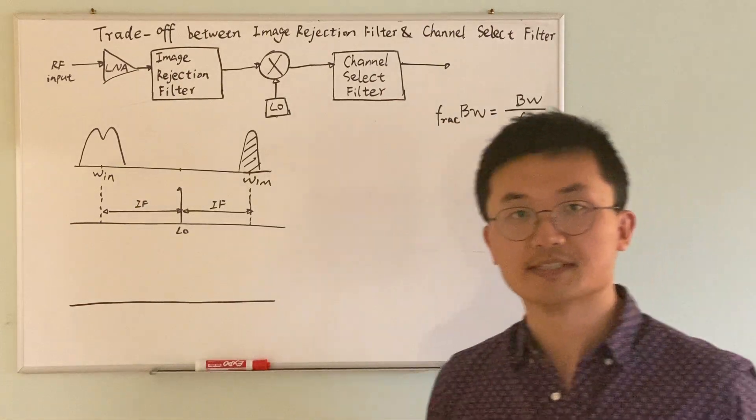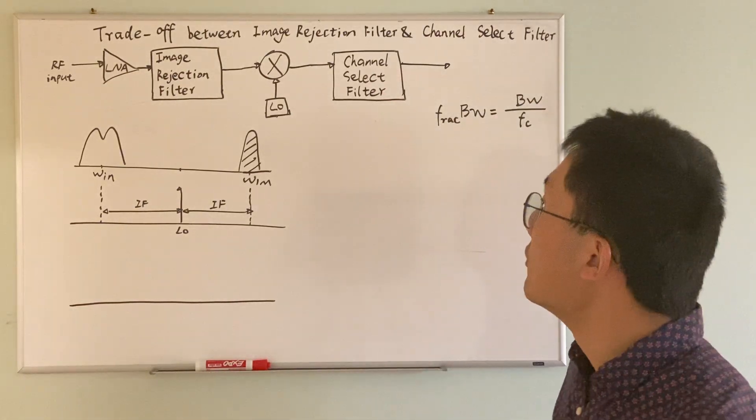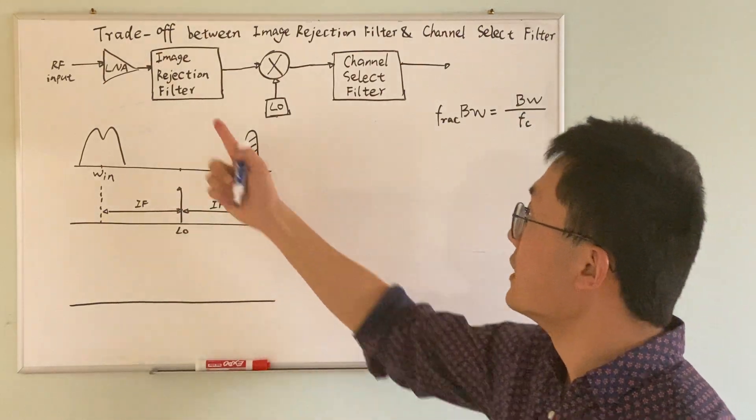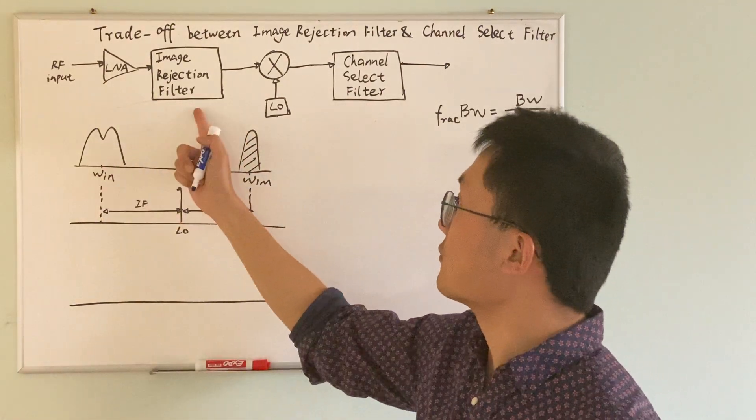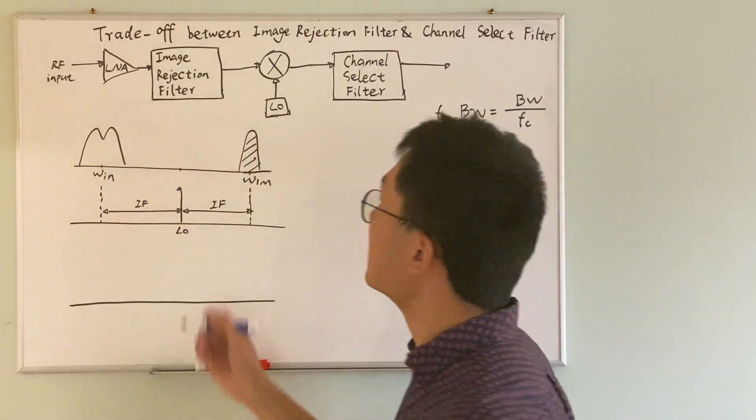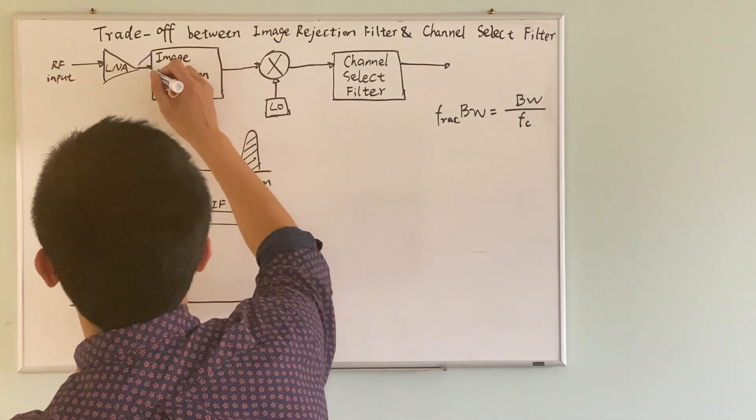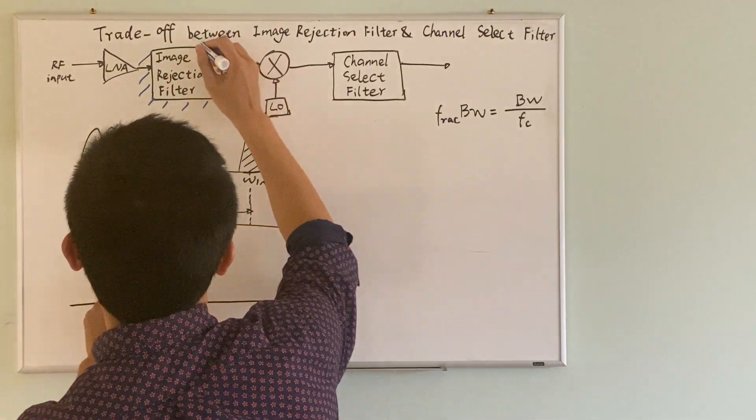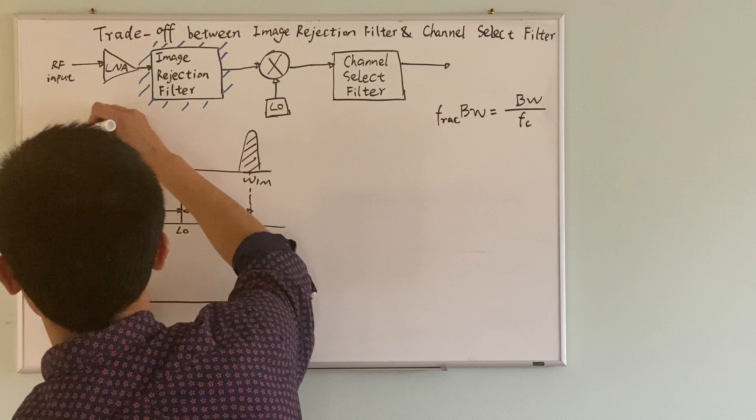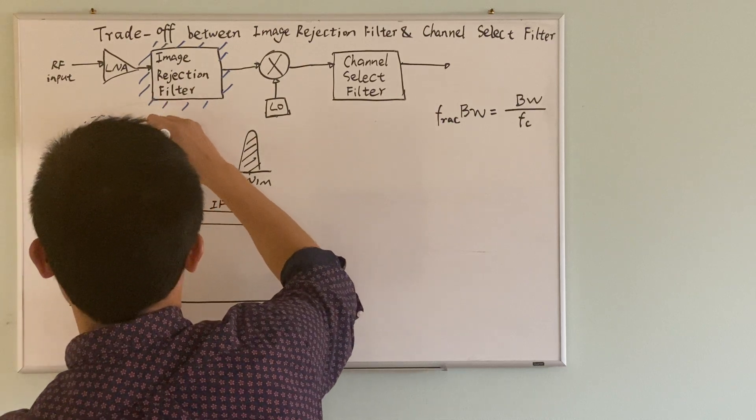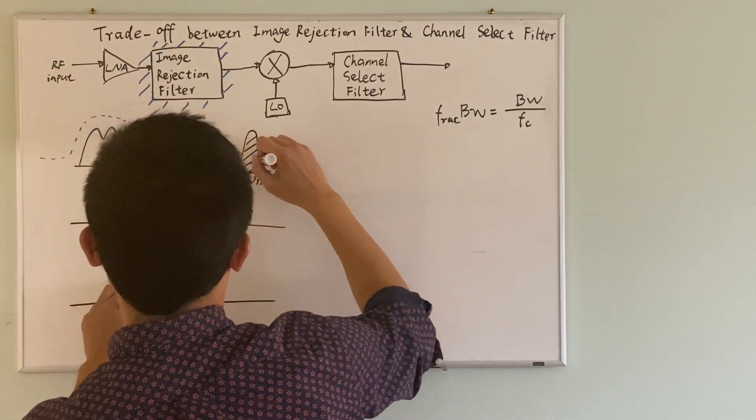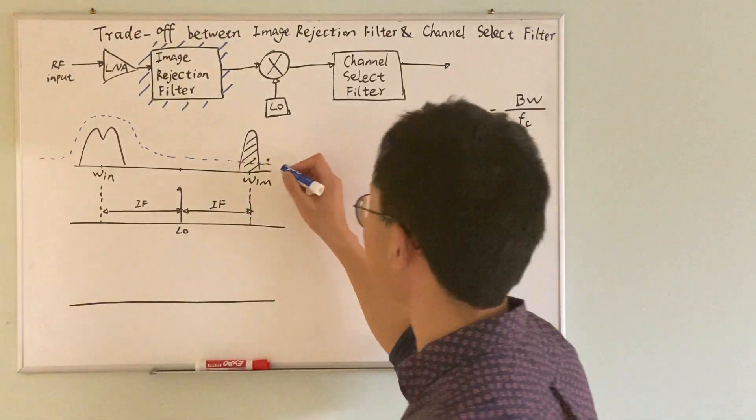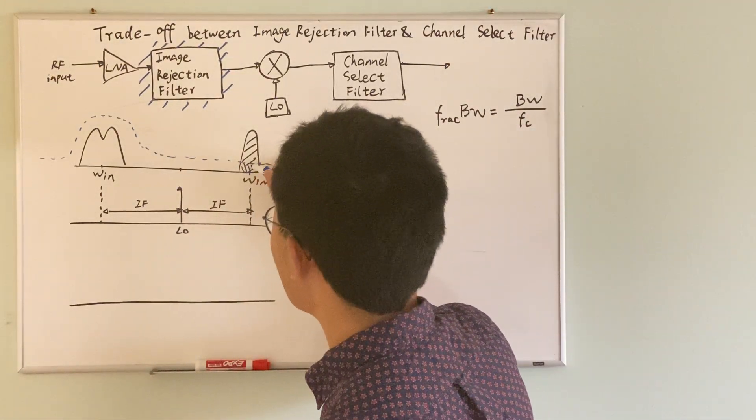We know from the previous video that before we mix the input with the LO, the input signal goes through the image rejection filter. I'm going to use the blue marker to highlight it. And the image rejection filter is essentially a low-pass filter that suppresses the image.